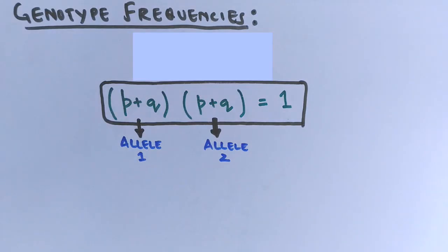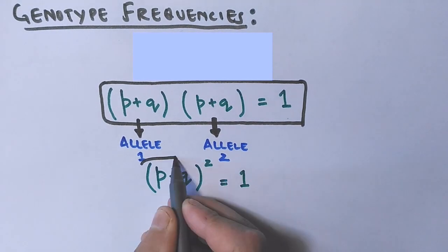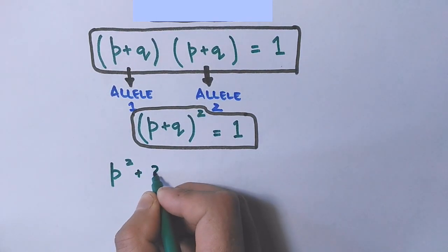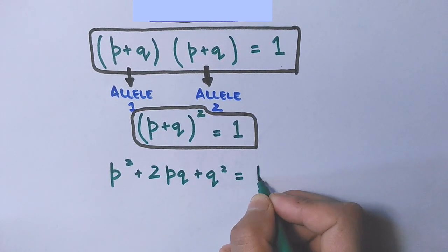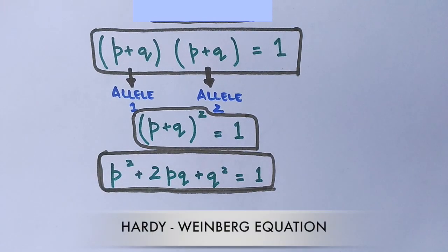This equation can be written as (P + Q) whole square, which upon simplification gives the final equation P² + 2PQ + Q² = 1, which is the Hardy-Weinberg equation. This is the final equation for Hardy-Weinberg.